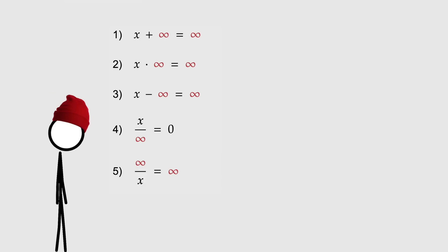Number four, any number divided by infinity equals zero. Yeah. Number five, infinity divided by any number equals infinity. And finally, number six, anything divided by zero equals infinity. Ah, okay. So one over zero is infinity, but two over zero is also infinity. And pi over zero. And negative ten over zero. Any number divided by zero will always be infinity.